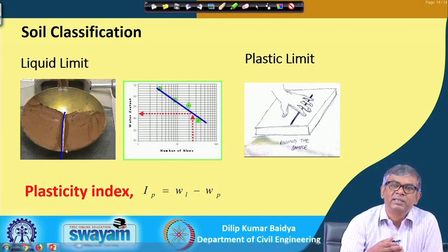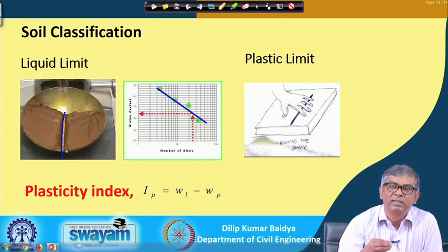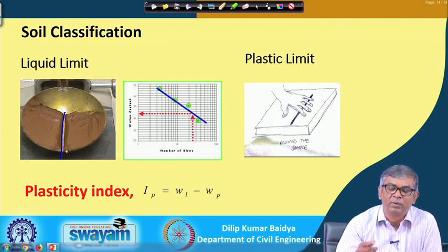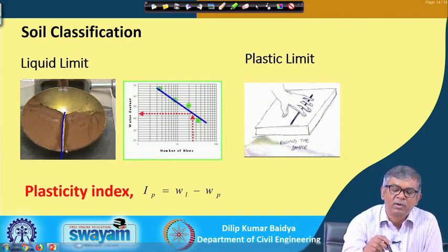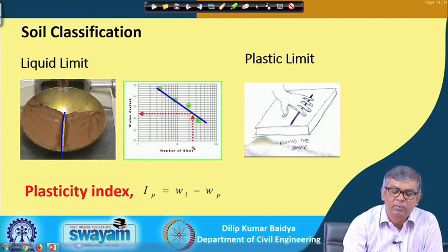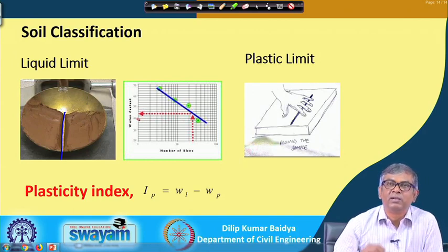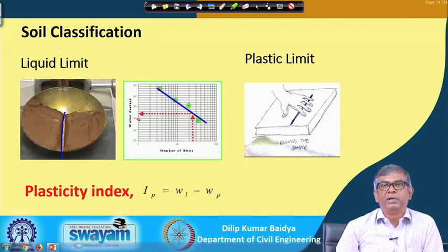By single trial it is difficult, so we mix the soil with different percentages of water and carry out the test each time, recording the number of blows versus water content. We plot number of blows versus water content, and from this curve, the water content corresponding to 25 blows is obtained — that is defined as the liquid limit.